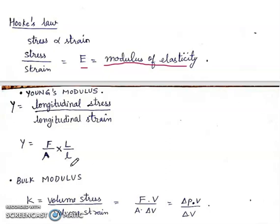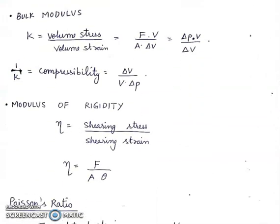Bulk modulus K is equal to volume stress upon volume strain, which is force upon area multiplied by V upon delta V. Force upon area can be written as delta P, so K will be equal to delta P into V upon delta V. Also, 1 upon K is compressibility, which is equal to delta V upon V delta P.